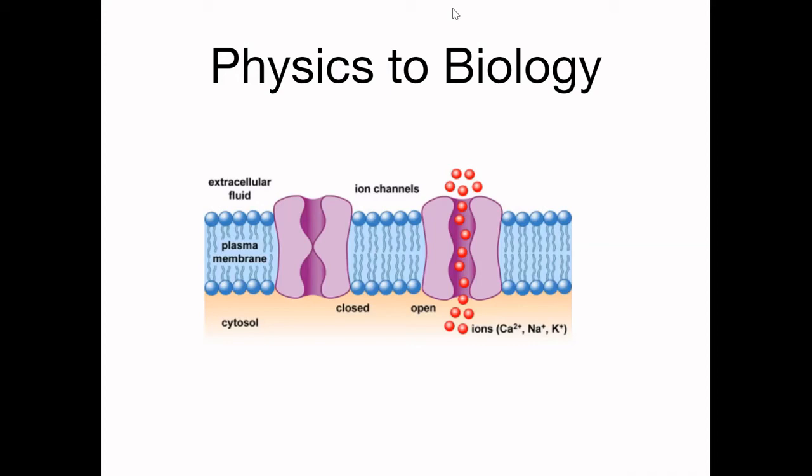So, ions are charged elements, charged chemicals, and your cells need these things to be able to carry out whatever specific process they need to do. And the way that these ion channels work is they will only let through things that have the correct charge. So, this is an electric charge that has to do with electricity and magnetism.